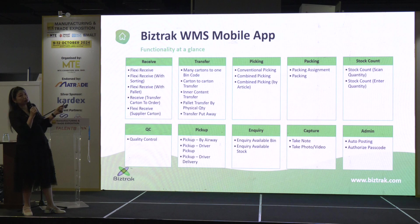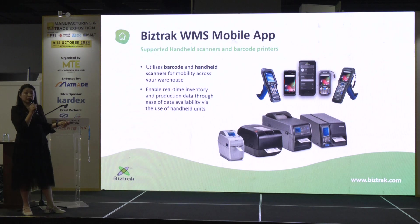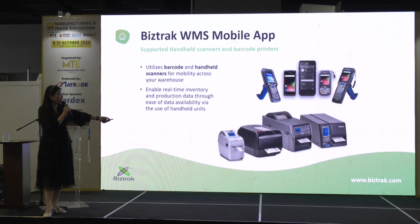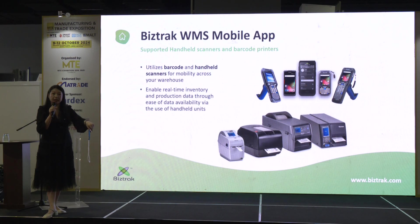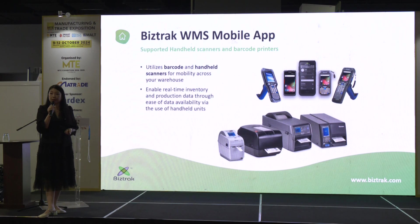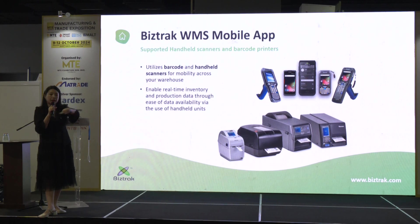These are the functionalities available in our mobile application with very rich functions. For WMS, normally you have to invest in a handheld scanner and a barcode printer to print out labels. Of course, if using pallets, they can use a normal printer as well, printing in A4 to save cost. Because for each label, it could cost maybe 20 to 30 cents. Some clients use A4 paper because they have wrapping, and it works fine with no problem.